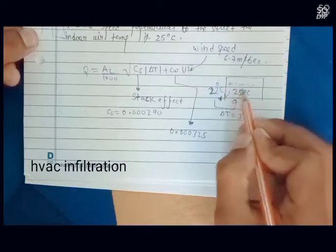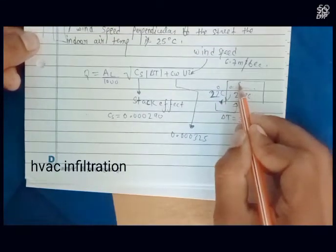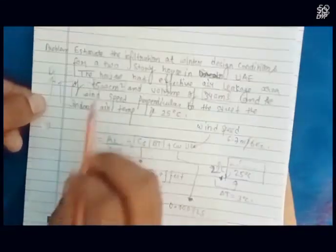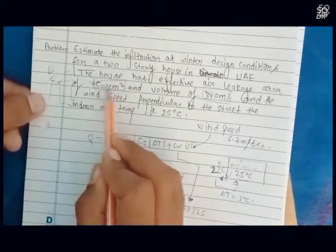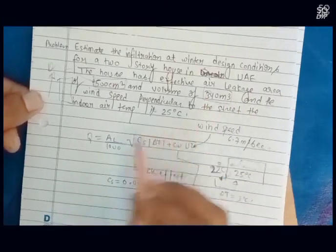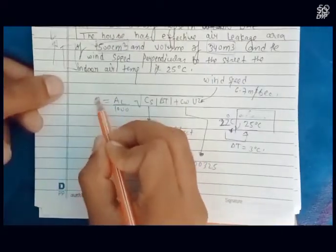So the occupied space is infiltrated. The infiltration area is 500 centimeter square and the volume is 30 to 40 meter cube. As we know, the formula for it is Q equals...